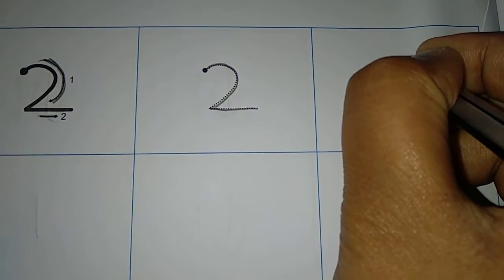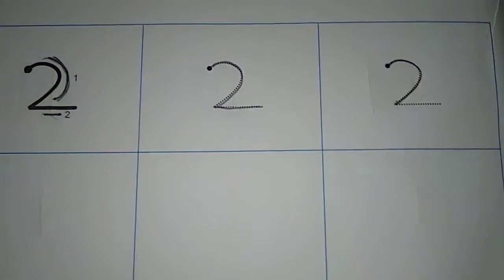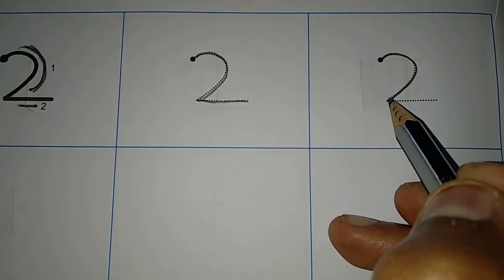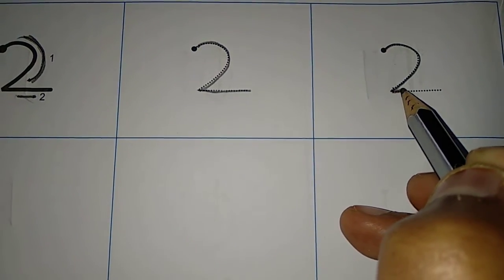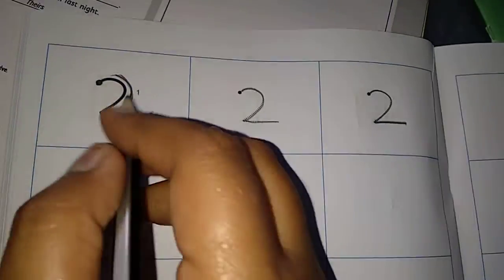First, you have to write right side curve. And the end of that curve, you have to add 1 sleeping line. It forms letter 2. See here. They given the hint. From where we have to start. Okay.